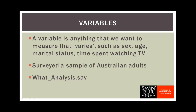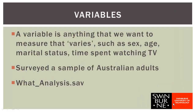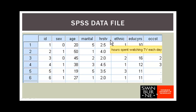We've stored the information collected from a sample of Australian adults in an SPSS data file called whatanalysis.sav. When you open this file in SPSS, in the data view you'll see a spreadsheet with headings and numbers. Each row represents a different person and all of their responses, while the columns represent the different variables. Some column headings are obvious — sex represents whether the person was male or female, age tells you how old they were. For less obvious ones like HRS TV, you can hover the cursor over the heading to see that it represents hours spent watching TV each day.